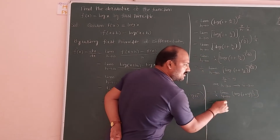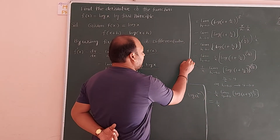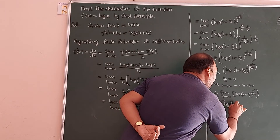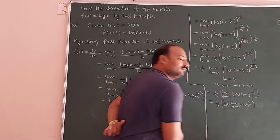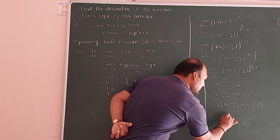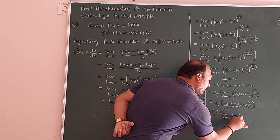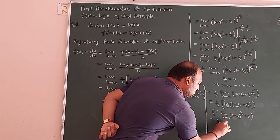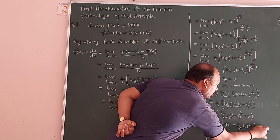We can apply the standard formula: limit y→0 of (1 + y)^(1/y) = e. Therefore the expression becomes (1/x) · log(e). Since log(e) = 1, this simplifies to (1/x) · 1, which equals 1/x.